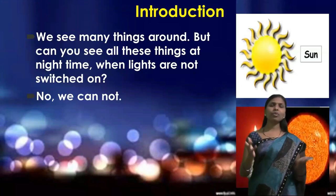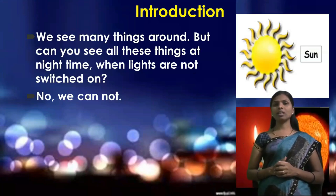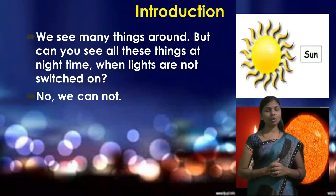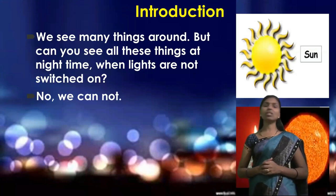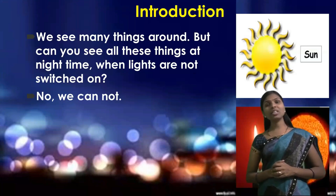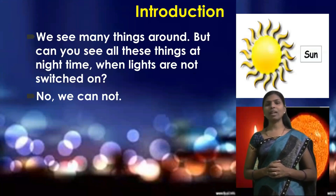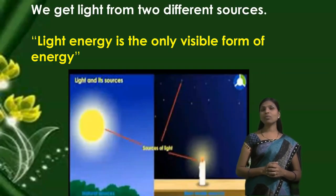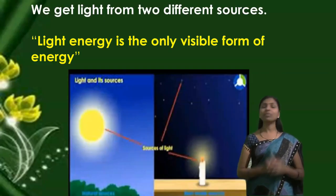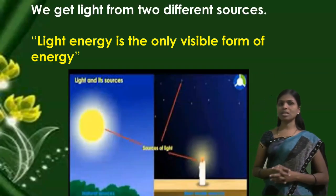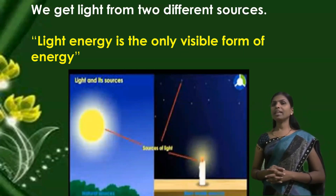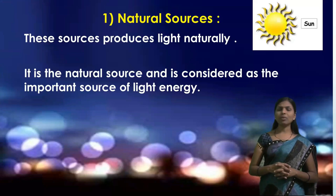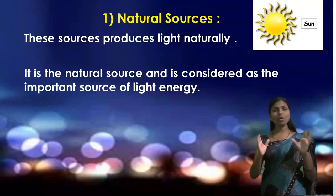We see many different types of things around us, but can you see all these things without light? No, we cannot see. That is why light is very important in our life. We get light from two different types of sources. Light energy is the only visible form of energy, so without light we cannot see anything.